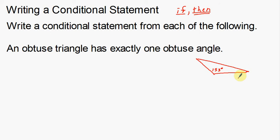As I go through this, I can start to see the if part and the then part. It might actually be easier to see the conclusion — the then part — first. Reading through the sentence, 'has exactly one obtuse angle' is kind of a conclusion, a bold statement about what an obtuse triangle is. That right there is the conclusion part of the sentence, and that's what I'm going to use for my conclusion.